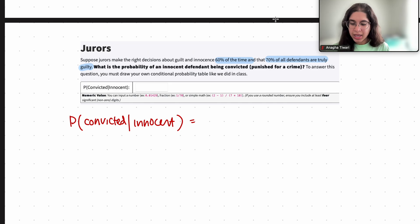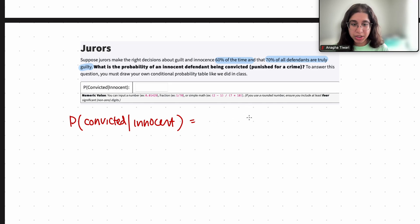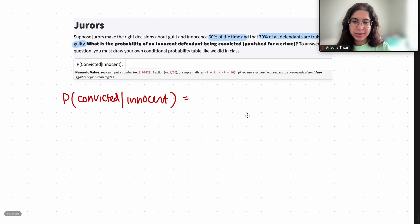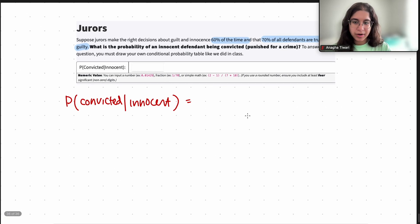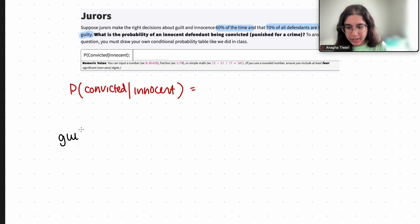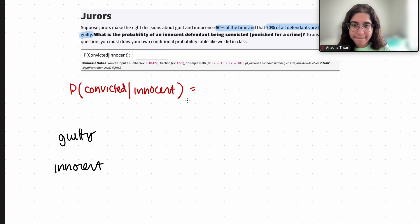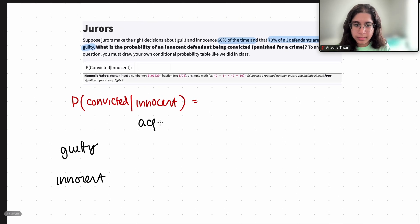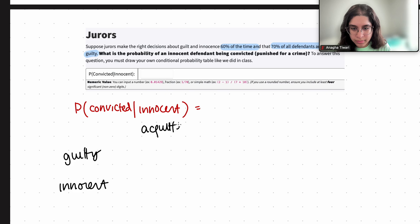Of course you can use any formula you want — you can use Bayes' theorem, that's totally up to you — but I think the table really helps you visualize what the probabilities are. So I'm going to go ahead and create a table where I have 'guilty' and 'innocent' as columns, and then 'acquitted' and 'convicted' as rows.